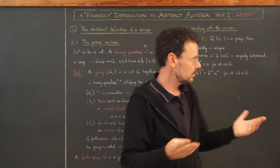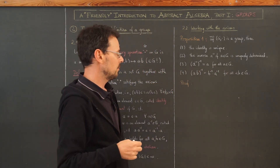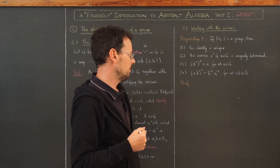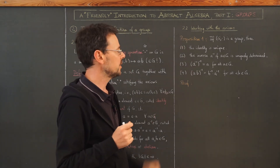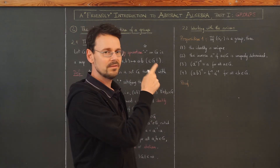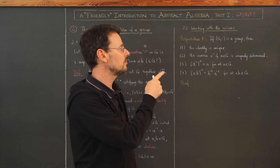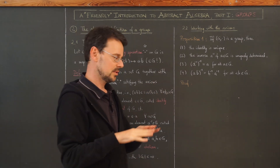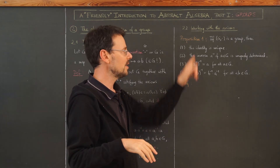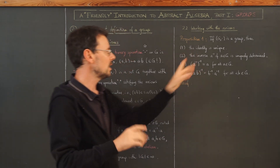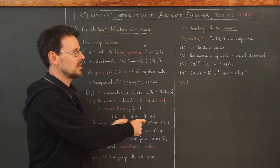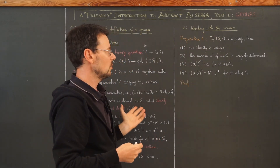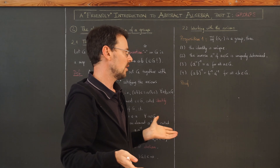This is important because the group does not have to be commutative. If it is, then the order is not important, but in general you have to write it that way. This all seems obvious, but if you've never seen the proof before, I'd highly encourage you to pause the video and try this on your own — you are only allowed to use these axioms.